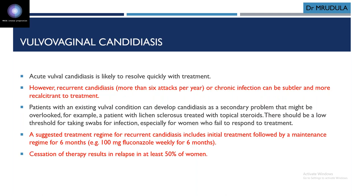Vulvovaginal candidiasis has two types: acute and recurrent. Acute usually resolves quickly with a single dose of treatment. Recurrent candidiasis means six attacks per year or chronic infection — more recalcitrant to treatment. Patients with other conditions like lichen sclerosis or eczema can develop candidiasis from repeated topical steroid application. Treatment for recurrent candidiasis: initial treatment followed by maintenance regime for six months — fluconazole 100 mg single dose initially, followed by 100 mg weekly for six months. Cessation may result in relapse in at least 50% of women.